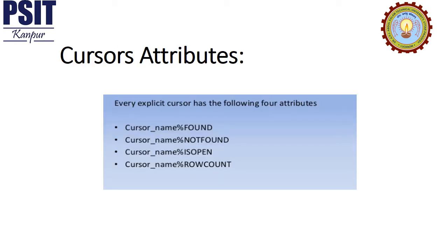These are the attributes of cursors. %FOUND means TRUE if at least one row was processed, or a record was fetched successfully from the opened cursor, and FALSE otherwise. %NOTFOUND is TRUE if no rows were processed or a record was not fetched successfully, and FALSE otherwise. %ISOPEN is TRUE if the cursor is open and FALSE if the cursor is closed; it is used only with explicit cursors. %ROWCOUNT returns the number of rows or records processed by a cursor.